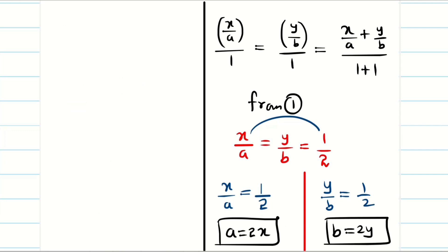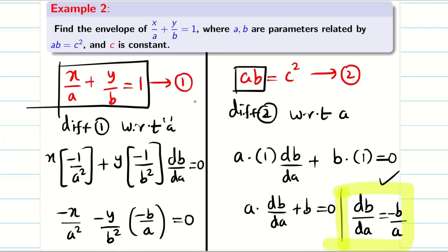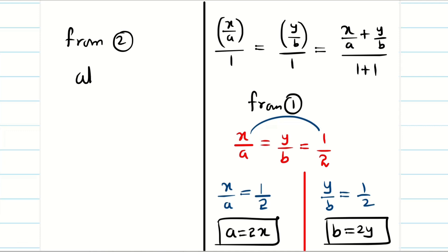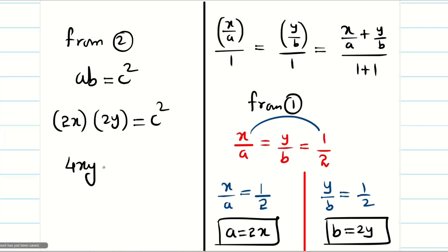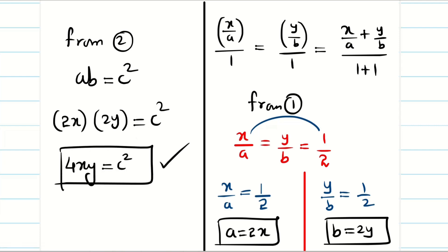Now substitute a = 2x and b = 2y into equation 2, which is ab = c². We get (2x)(2y) = c², so 4xy = c². This is the envelope for the given problem x/a + y/b = 1 with condition ab = c². We have eliminated parameters a and b and found the envelope.